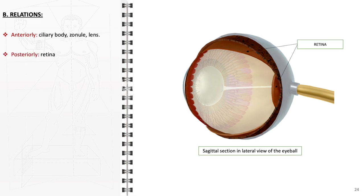Posteriorly, the vitreous is adjacent to the retina. This proximity is crucial for the transmission of light through the vitreous humor to the retina, enabling vision.